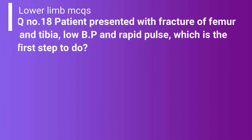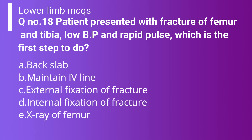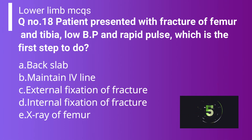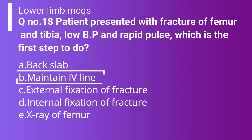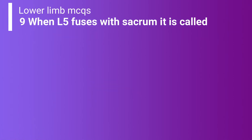Question number 18: A patient presents with fracture of femur and tibia, low blood pressure, and rapid pulse. What is the first step to do? Option A: back slab. Option B: maintain IV line. Option C: maintain external fixation of fracture. Option D: internal fixation of fracture. Option E: X-ray of femur. The correct answer is option B — maintain the IV line, because the patient is in shock. The rest of the options are secondary steps.